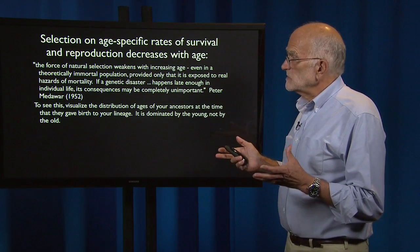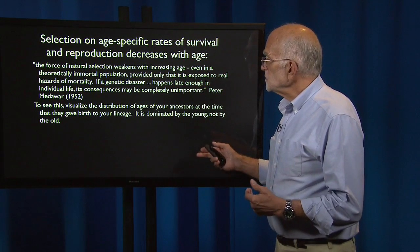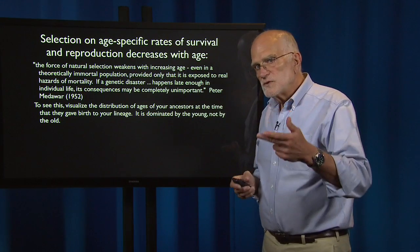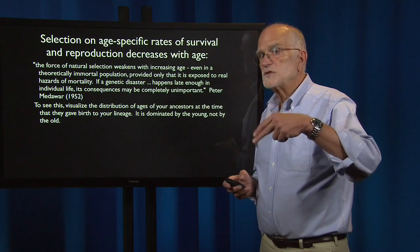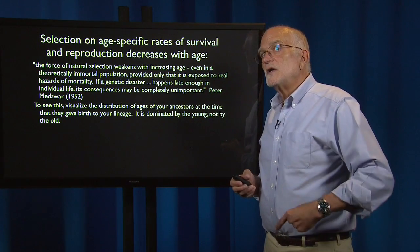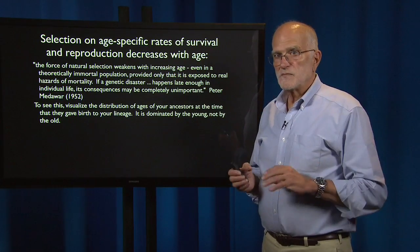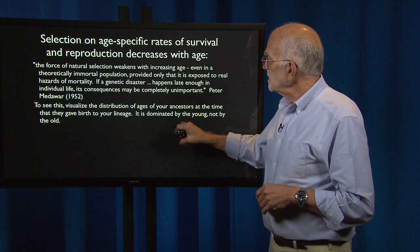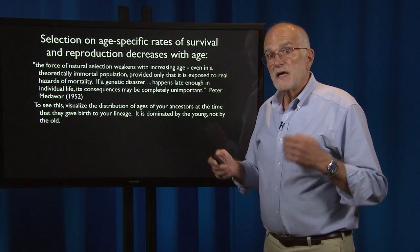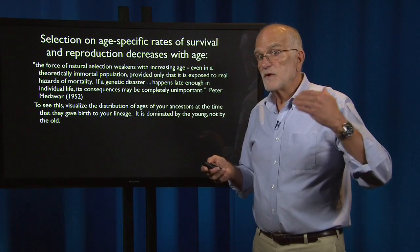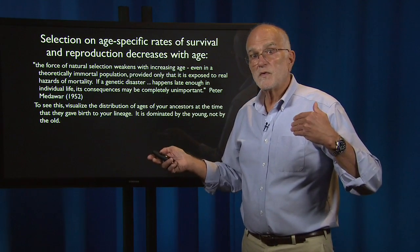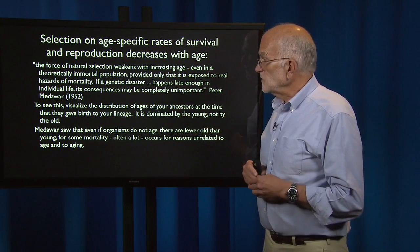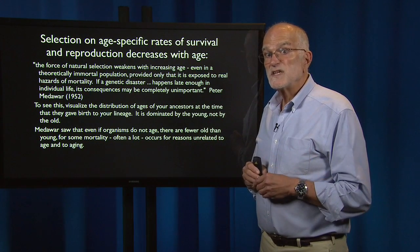To see this, visualize the distribution of ages of your ancestors at the time they gave birth to your lineage. Think about how old was your mother when she gave birth to you, how old was your grandmother when she gave birth to your mother — do that going back hundreds of generations. Construct a frequency histogram in your mind and you will see that it's dominated by the young, not the old. Evolution is a numbers game: things that happen frequently are important, things that happen rarely are not. Reproduction in the young is important; reproduction in the old is less important; and survival in the old becomes insignificant.